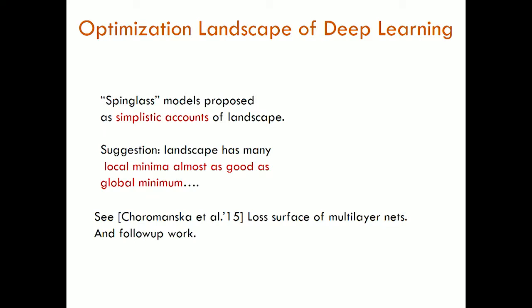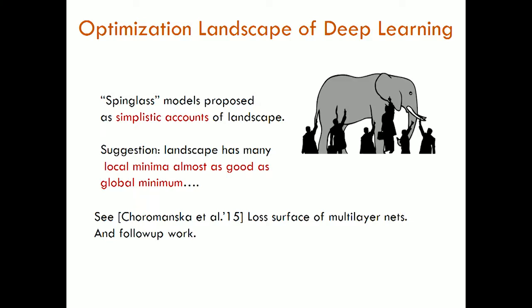Another piece of work from physics involves models based on spin glasses. Based on that, there are simplistic accounts of the deep learning landscape, and the suggestion is that the landscape has many local minima which are almost as good as the global minimum. In general, this whole field, as alluded to in the opening remarks, is a little bit like the elephant and we are the blind man — we all have our own existing tools and we approach this with those.